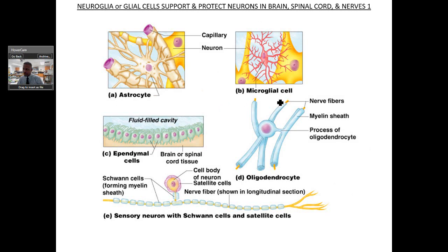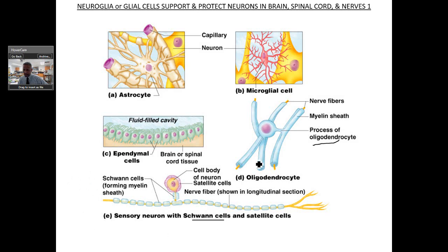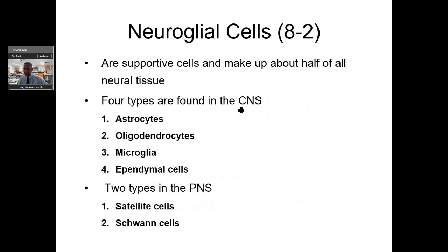The six neuroglia cell types are: astrocytes, microglia cells, oligodendrocytes, ependymal cells, satellite cells, and Schwann cells. Schwann cells form myelin, which is where we get the myelin sheath. The oligodendrocytes and Schwann cells have a very similar function — one is in the peripheral nervous system and one is in the central nervous system. Astrocytes, microglia, oligodendrocytes, and ependymal cells are the four found in the CNS — meaning the spinal cord and brain. Satellite cells and Schwann cells are in the peripheral nervous system.